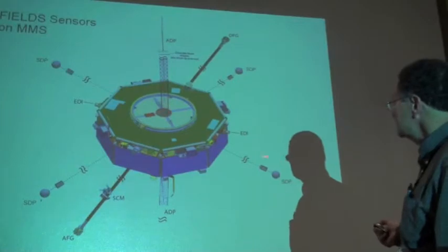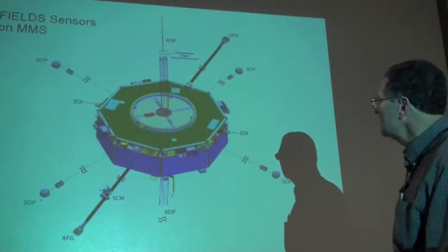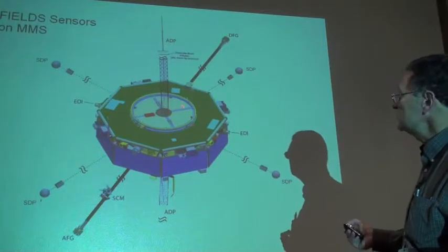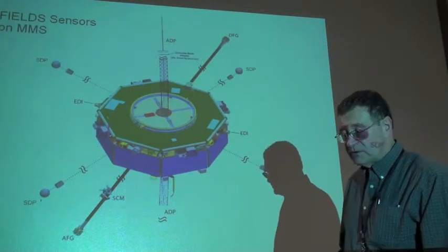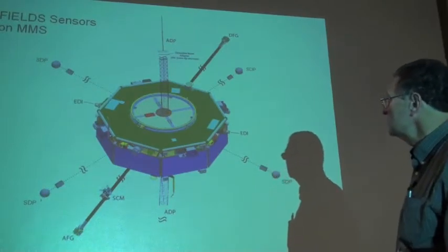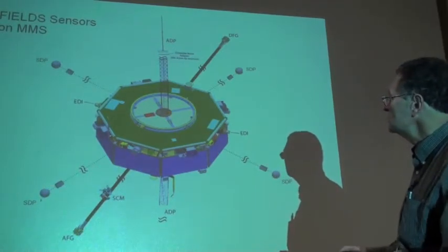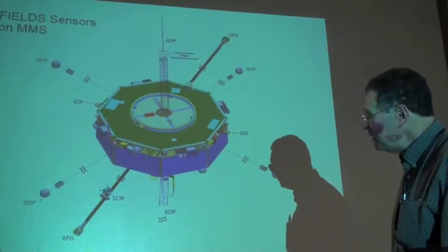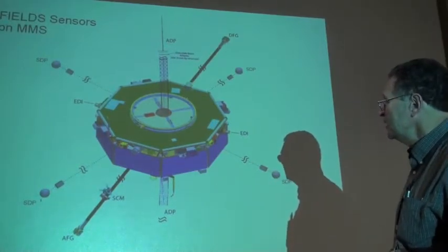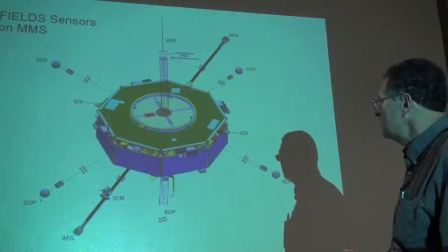There are four of these that lie in the spin plane. The spacecraft spins at about three revolutions per minute, meaning it takes 20 seconds to go a full revolution. In doing so, these electric field probes measure the entire three-dimensional electric field instantaneously at any point in that spin.